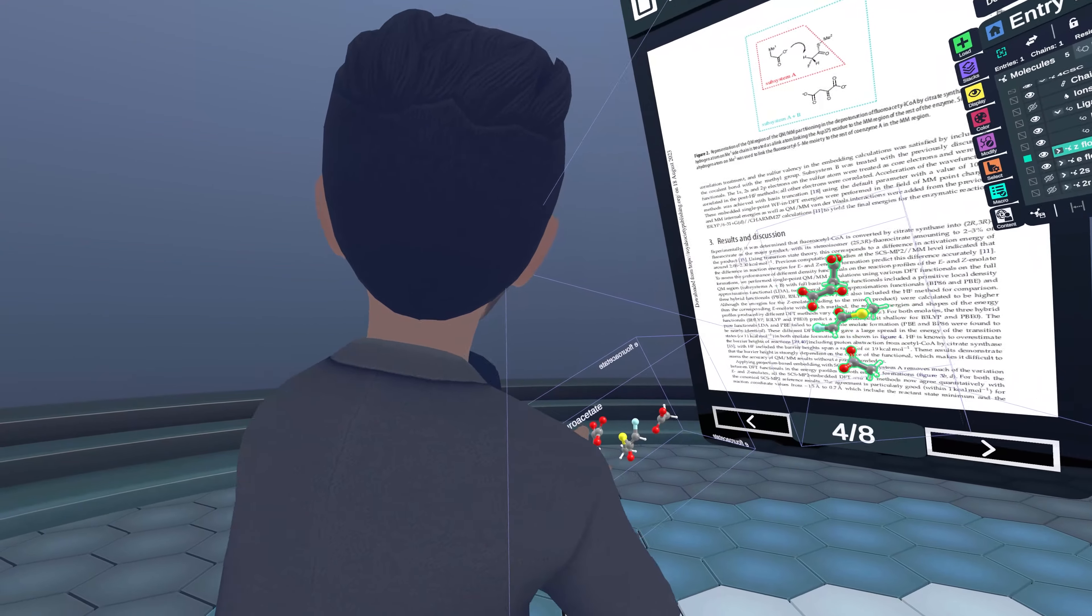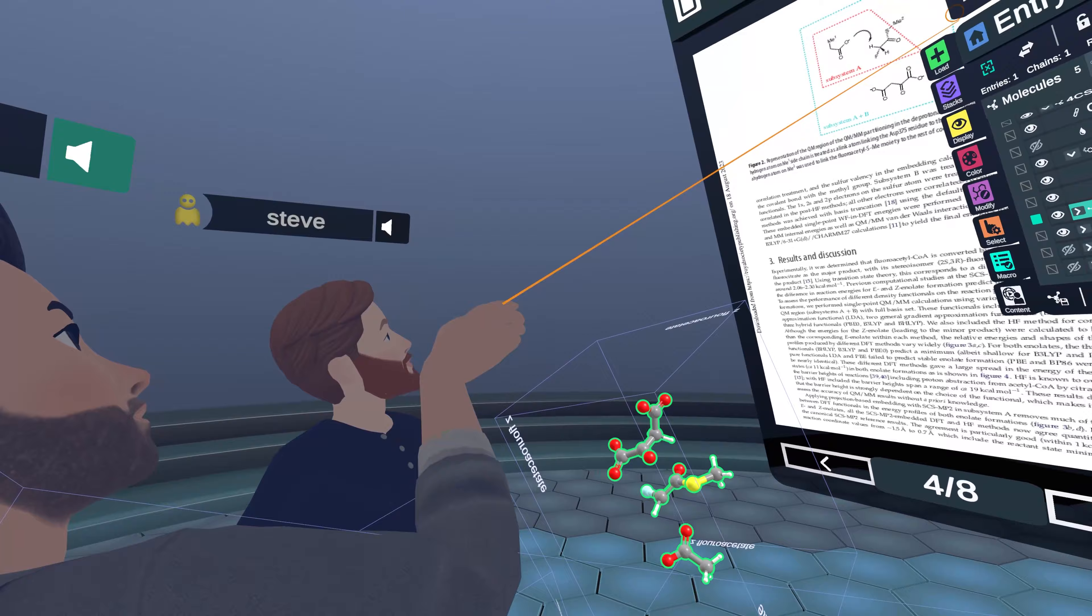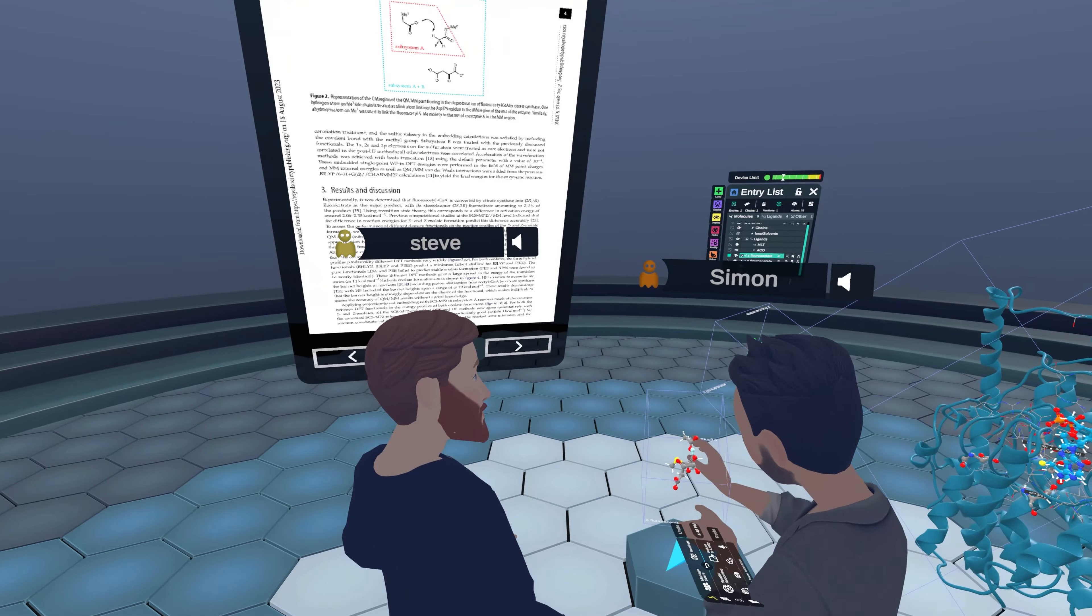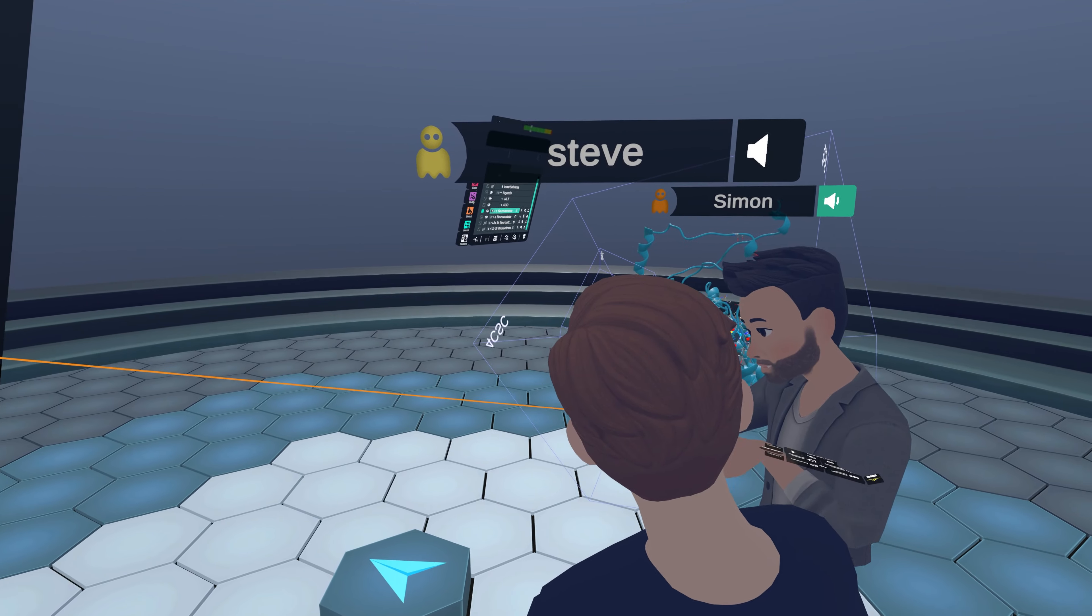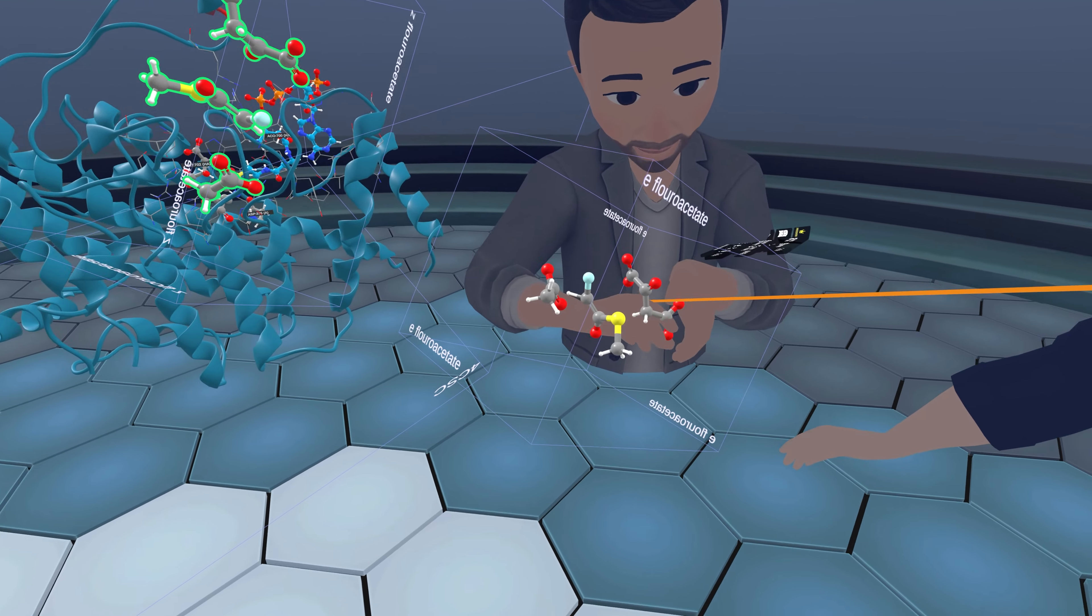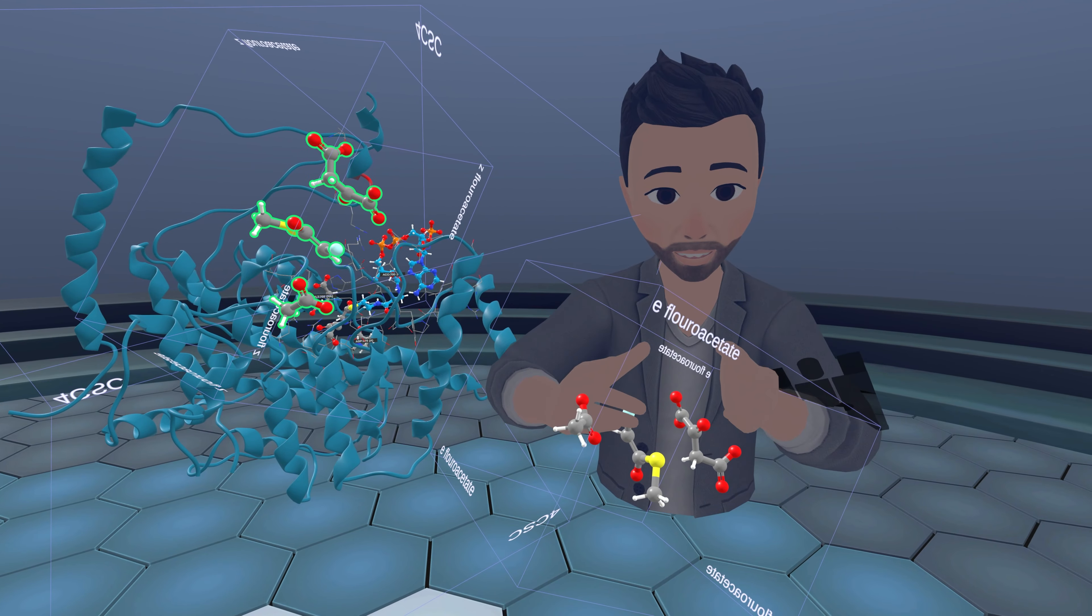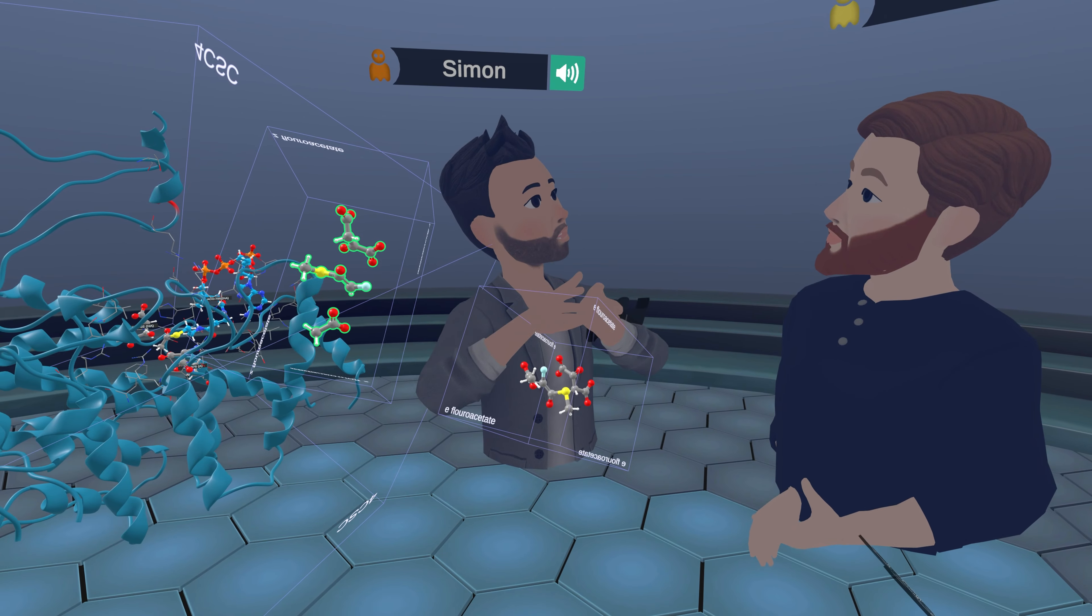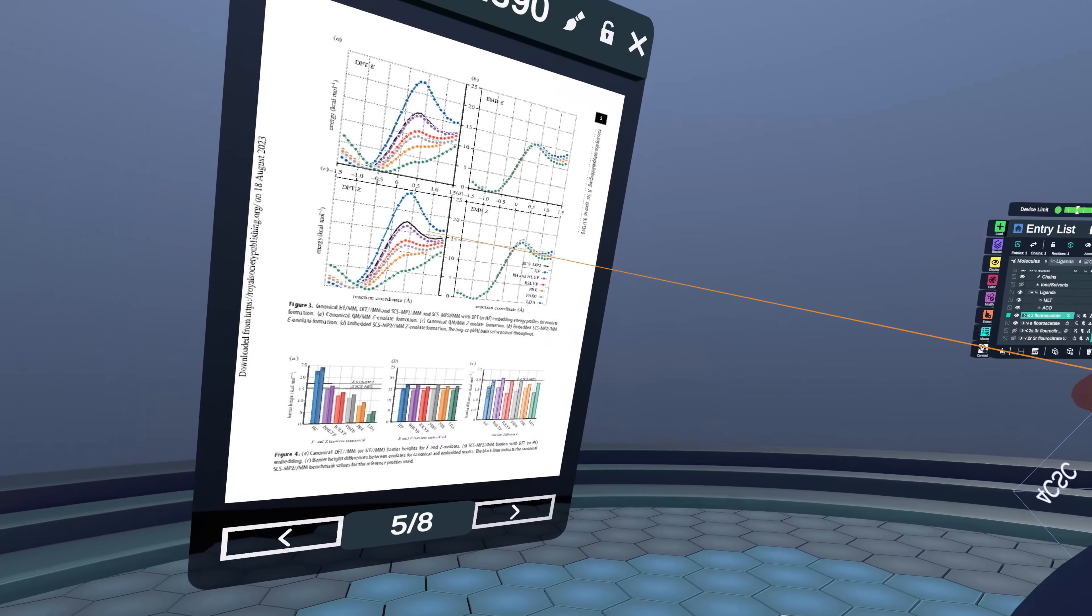Within QM methods, you kind of have to pick your poison. You say, I want this much accuracy, but I only have this much time or computer hardware available to me. So in this paper, what we did is we cut up the region even further, and we did what we call projector-based embedding. This is effectively where within this region, this area here of the residue and the fluoroacetate is actually all done at couple cluster level. But this moiety, the oxaloacetate, is actually then done at a DFT level. Just as the rest of this enzyme polarizes the QM region, the DFT polarizes the couple cluster region.